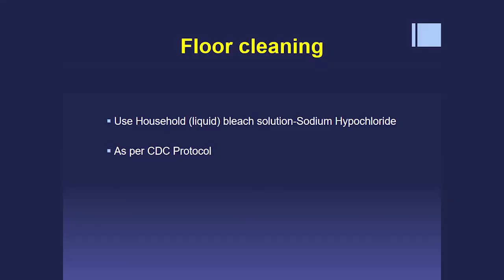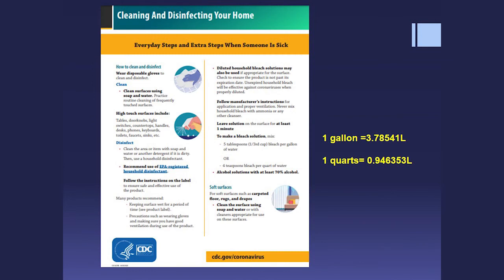Sodium hypochlorite is also a good disinfectant, but you must consider its material compatibility before use. For cleaning floors, it is the best and most cost-effective solution. Per CDC guidelines for coronavirus, it can also be used at home. The recommended concentration is 5 tablespoons of bleach per gallon of water (approximately 3 liters), or 4 teaspoons per quart (approximately 1 liter).